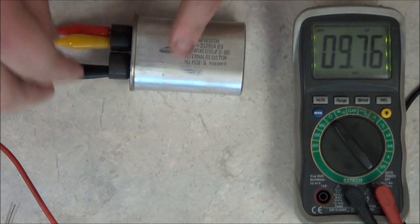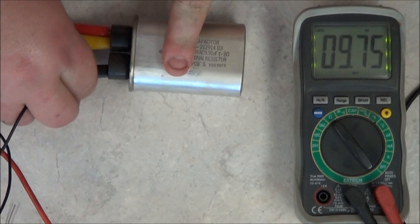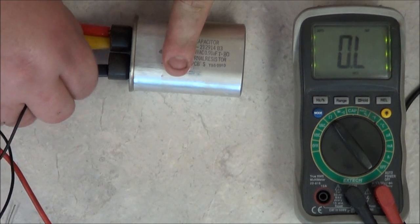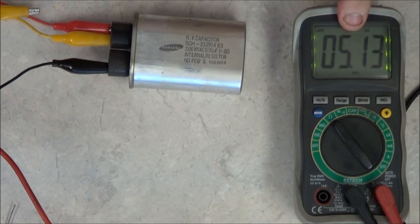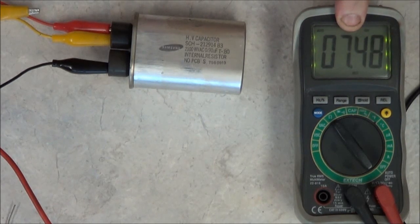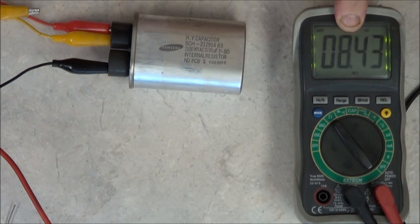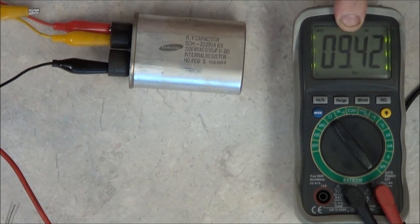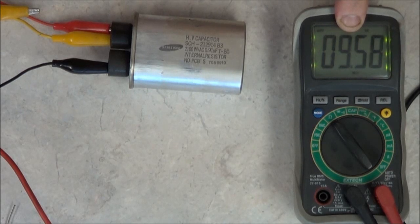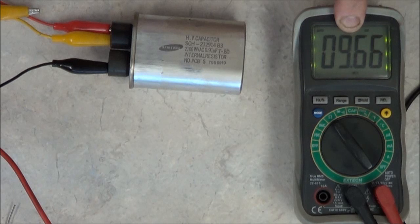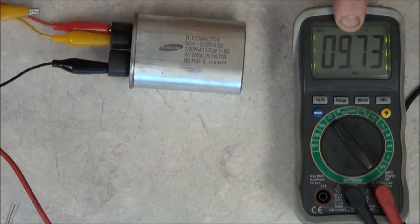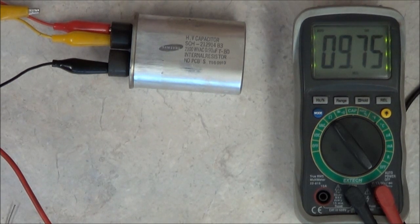Now, watch what happens when I remove one of the test leads. It goes to over the limit. Now, plug it back in. Notice how the resistance dropped, and now it's slowly going back up. This means that the resistor, or the capacitor, is charging again. The higher the microfarads of the capacitor, the longer it takes for it to charge the capacitor. Notice how it's starting to slow down now? Now, it's reaching the limit because of the 10 mega ohm resistor it's built inside.